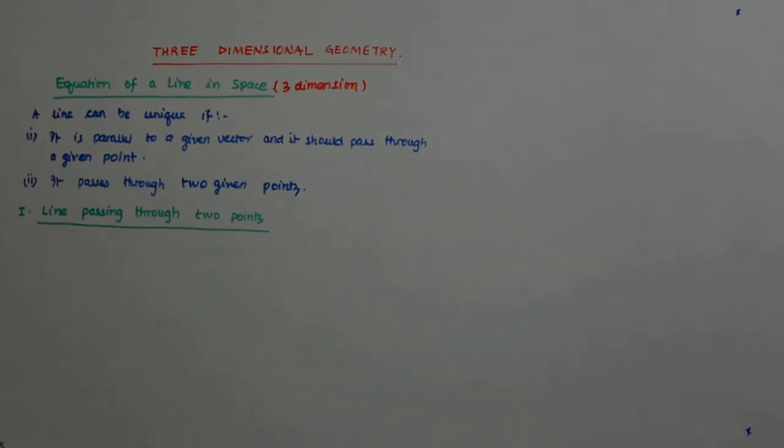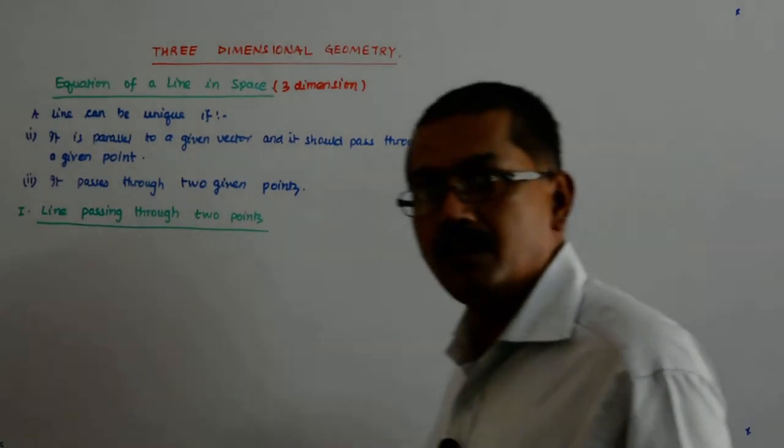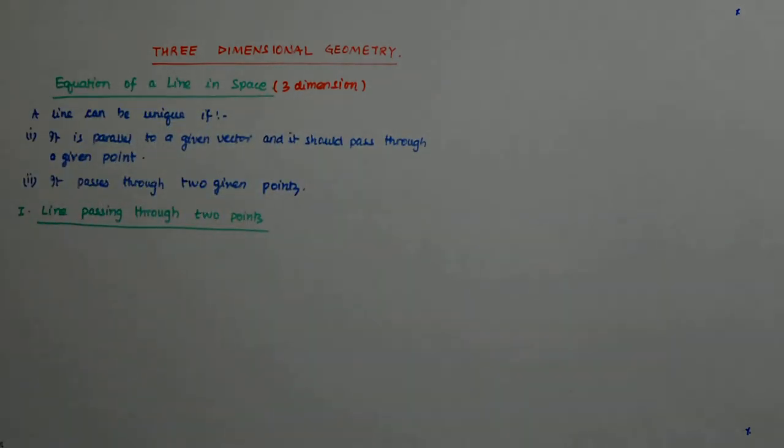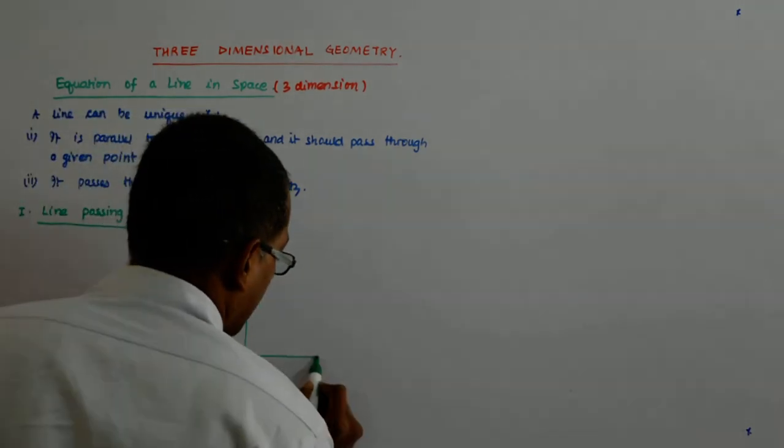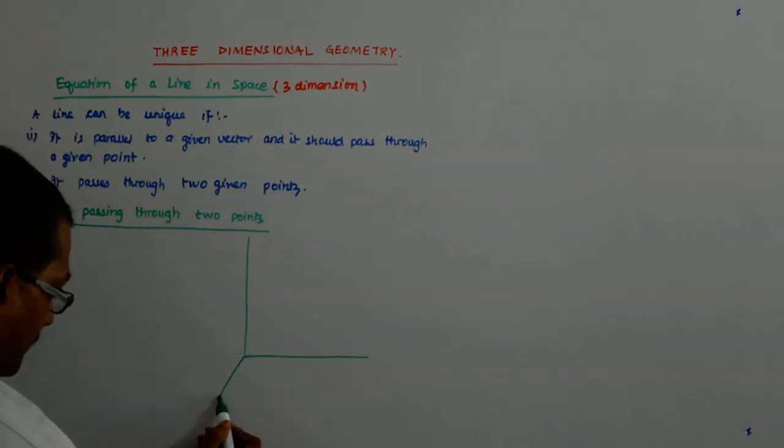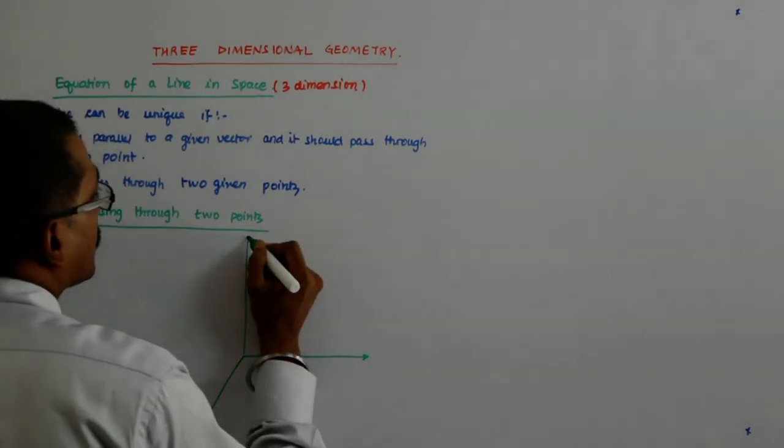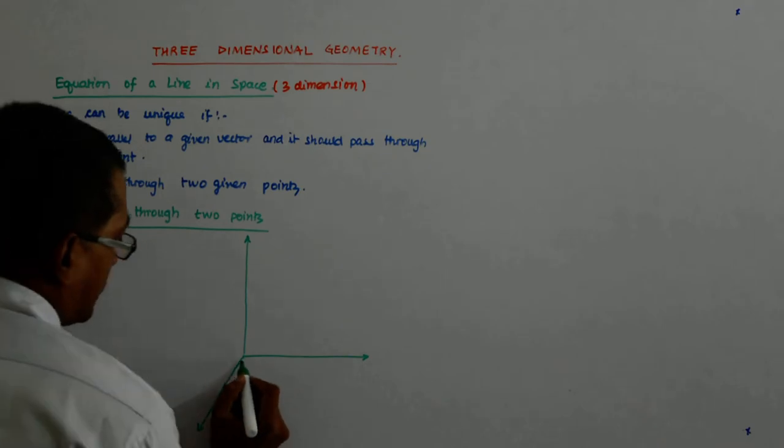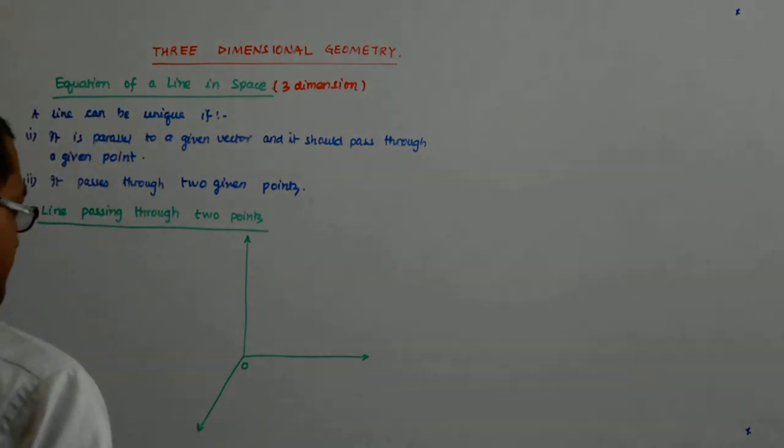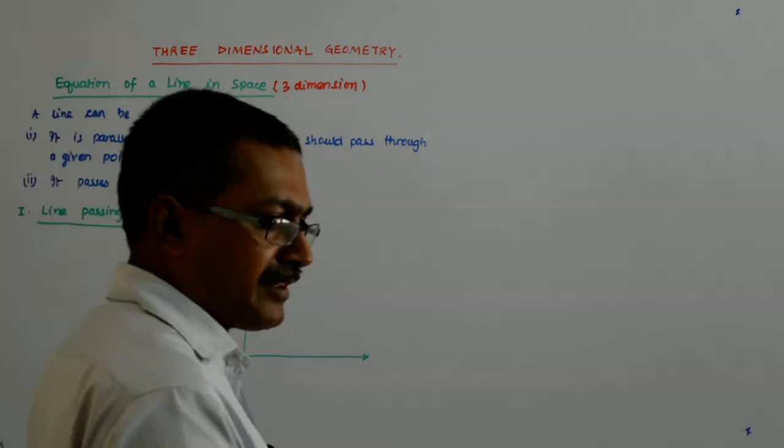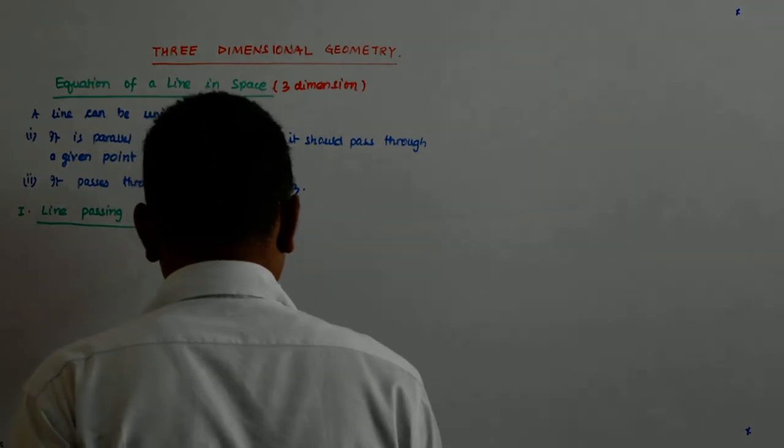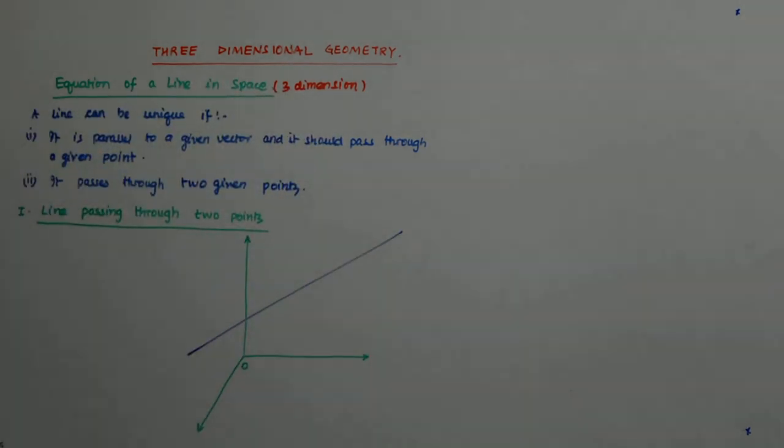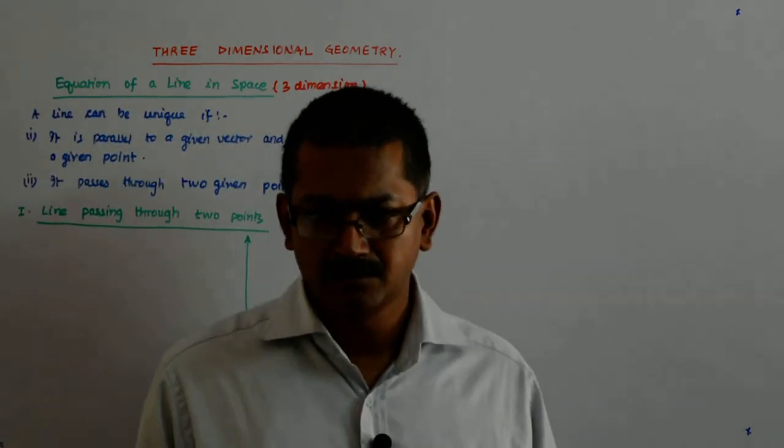Now we come to the next equation where the line is passing through two points. So I again draw the coordinate axis. Now I am given two points on the line. If this is my line, I am given two points and I know that the line will have to be unique. It has to be one line.